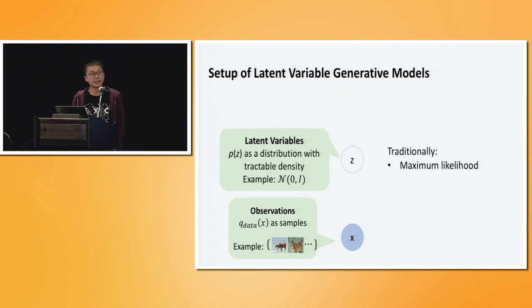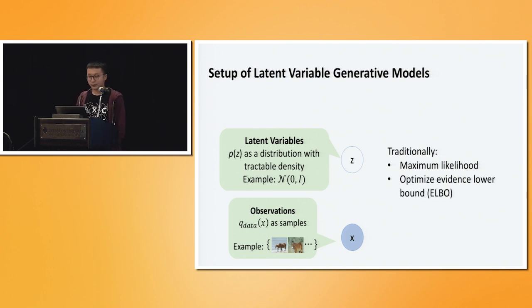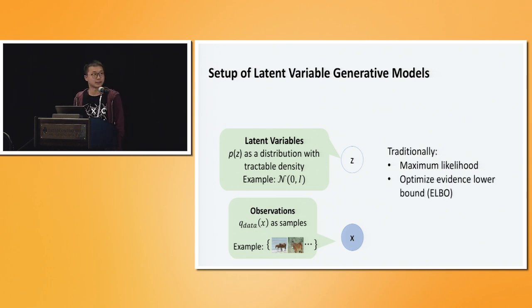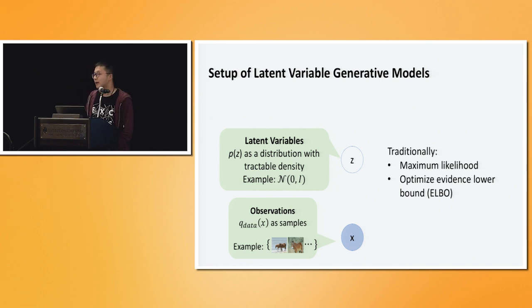Traditionally, these models are trained by maximum likelihood, and they are usually trained by optimizing the evidence lower bound. But here I'm going to show you a slightly different perspective on these models, and later I'll show that these are actually equivalent.